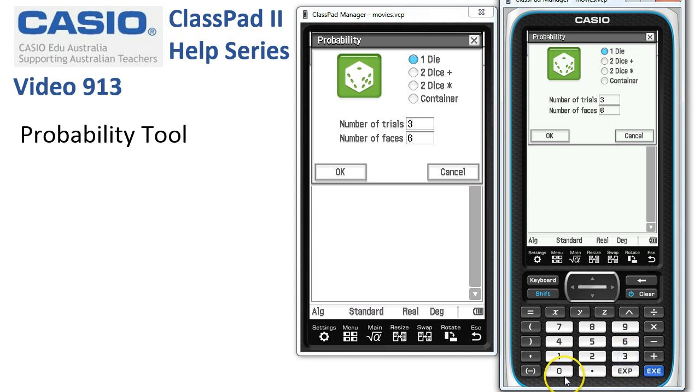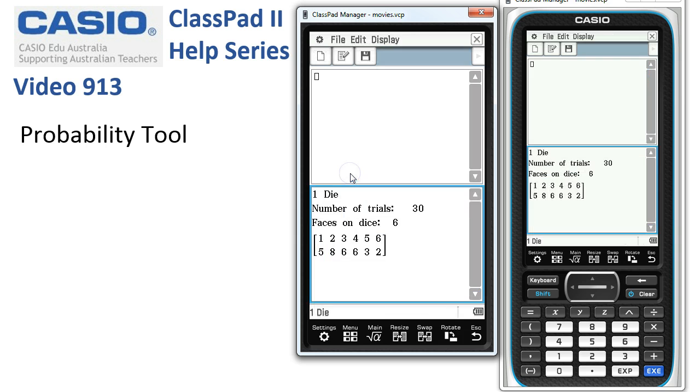But let's be a bit more ambitious. Let's have 30 throws. So when we tap OK, ClassPad simulates throwing the dice 30 times and you can see here's our frequency distribution. We've got mostly twos and hardly any sixes.